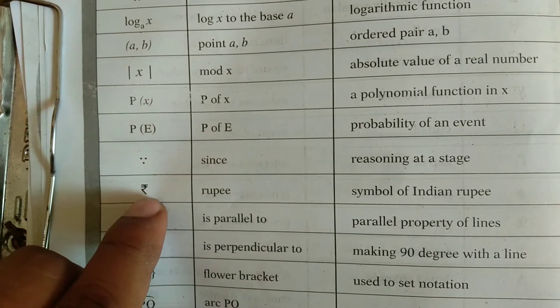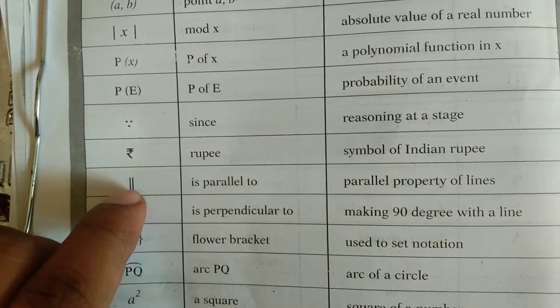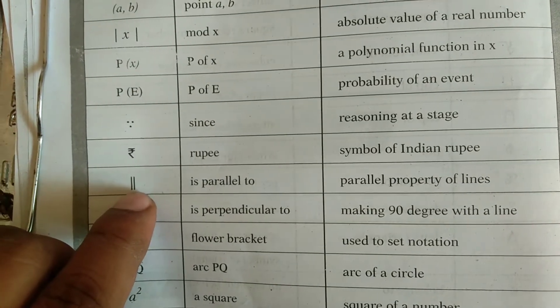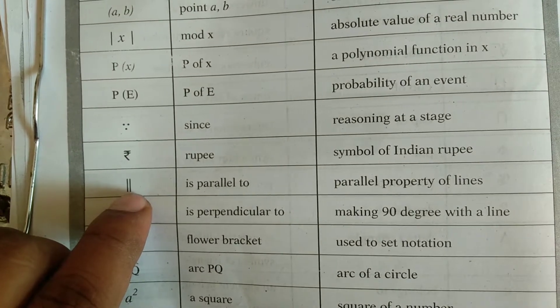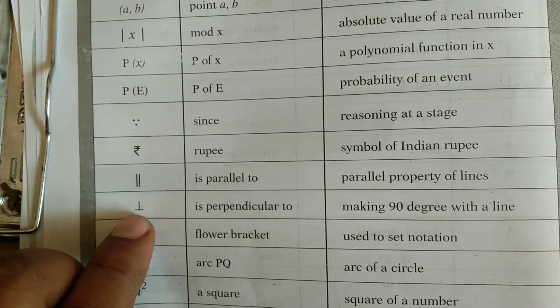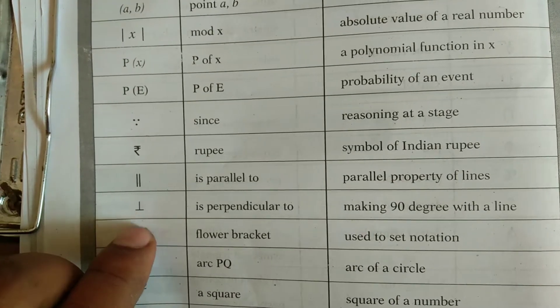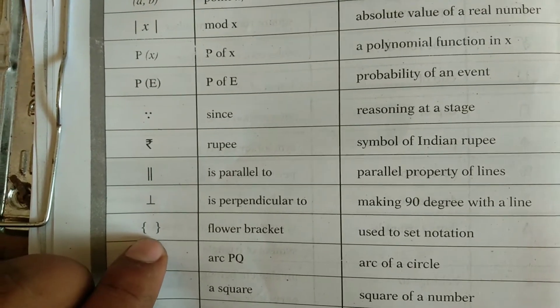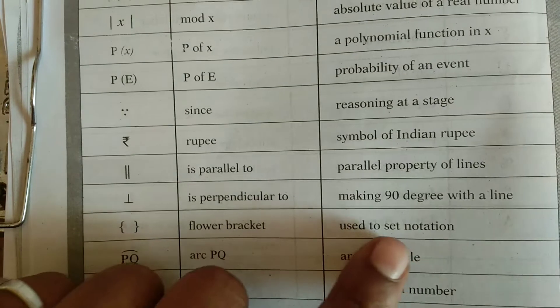This is the symbol for rupee, symbol of Indian rupee. This is parallel to, parallel property of lines. Perpendicular to, making ninety degrees with a line. This is called flower bracket, used to set notation.